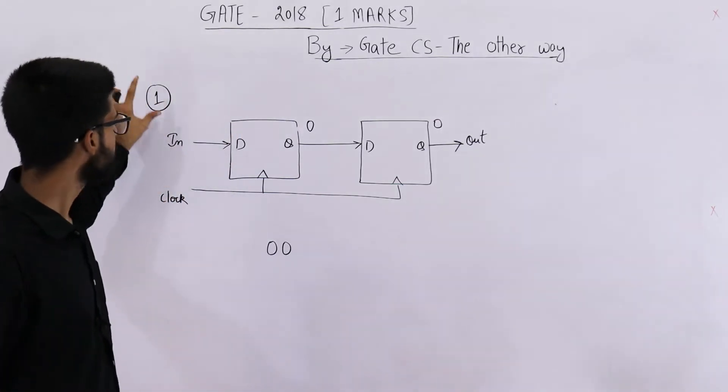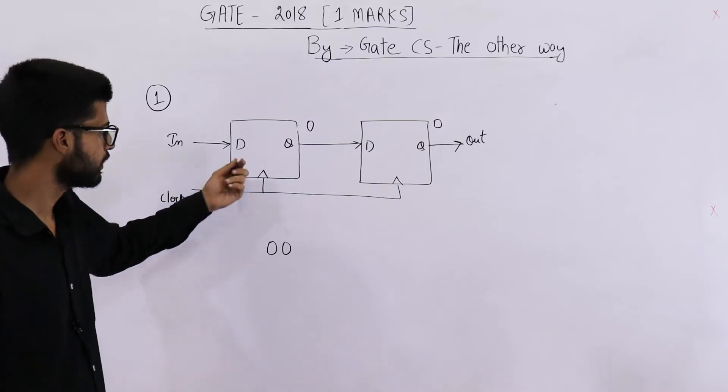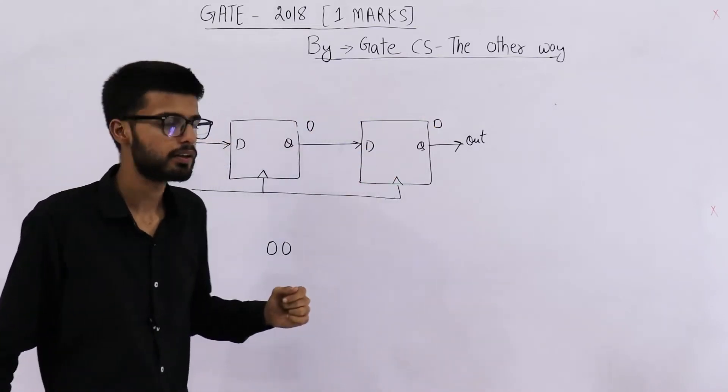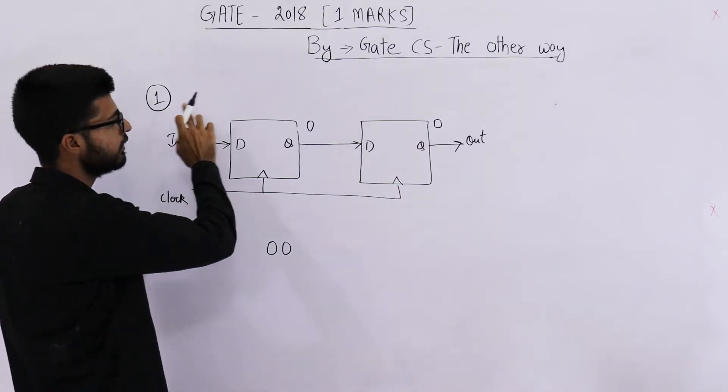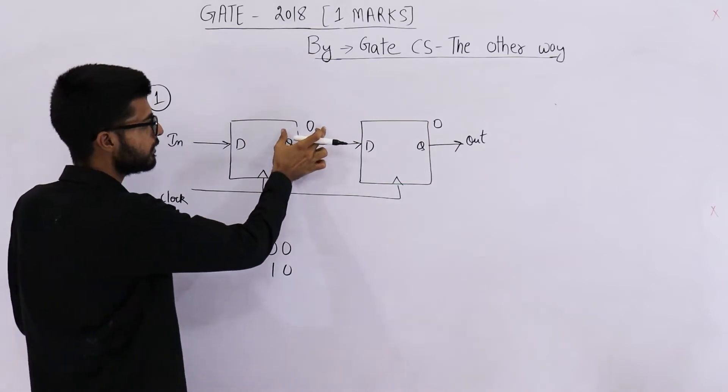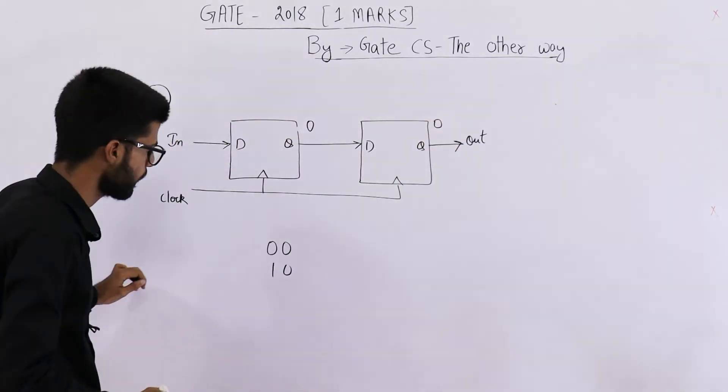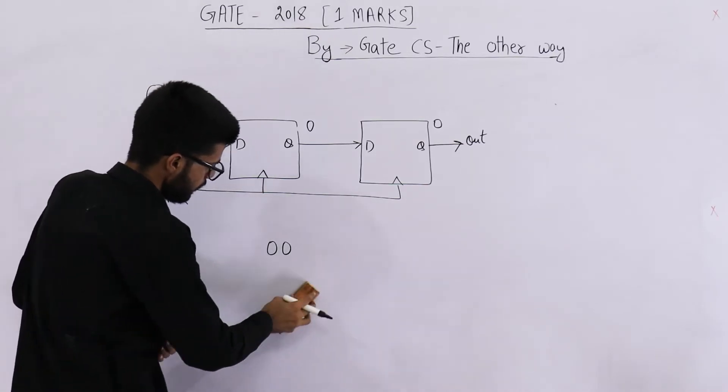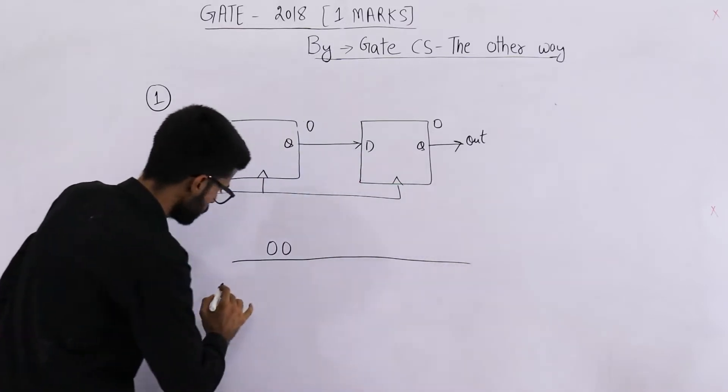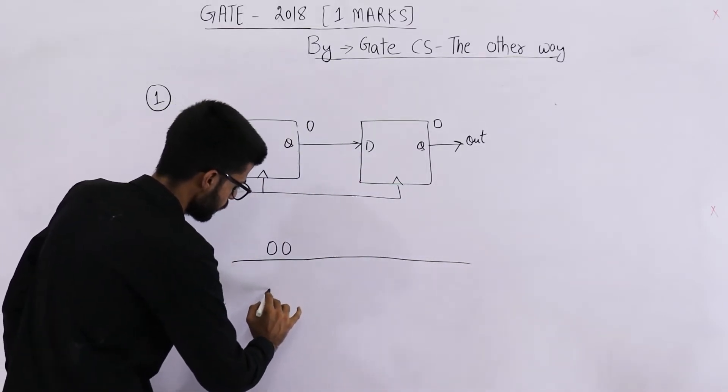In this case, if in is high, what will happen when a positive clock is given? When a clock is given, this will shift here and this one will shift here. So the next state is going to be 1, 0. Because this one is going to come here, this 0 is going to come here and this 0 will be discarded. So in case of input is equal to 1, the output is 1, 0.